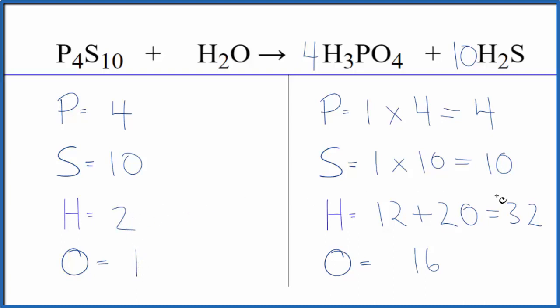So two times something will give me thirty-two. Two times sixteen. So two times sixteen, that'll give me thirty-two. That'll balance the hydrogens. One here times the sixteen. That'll give me sixteen. And we're done.